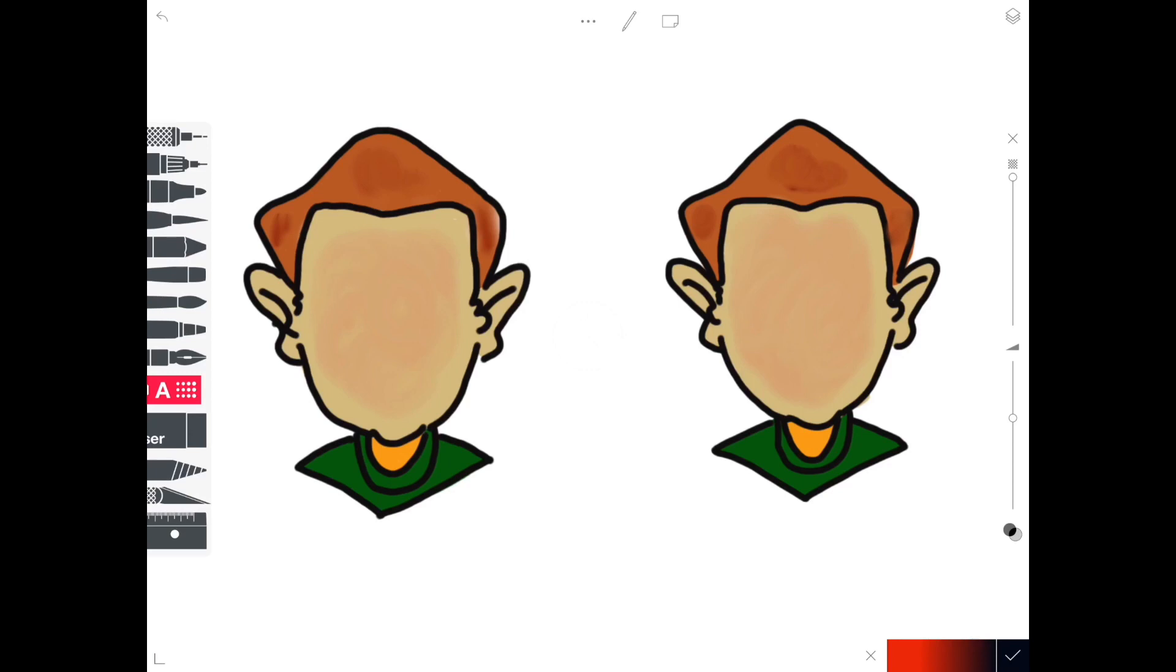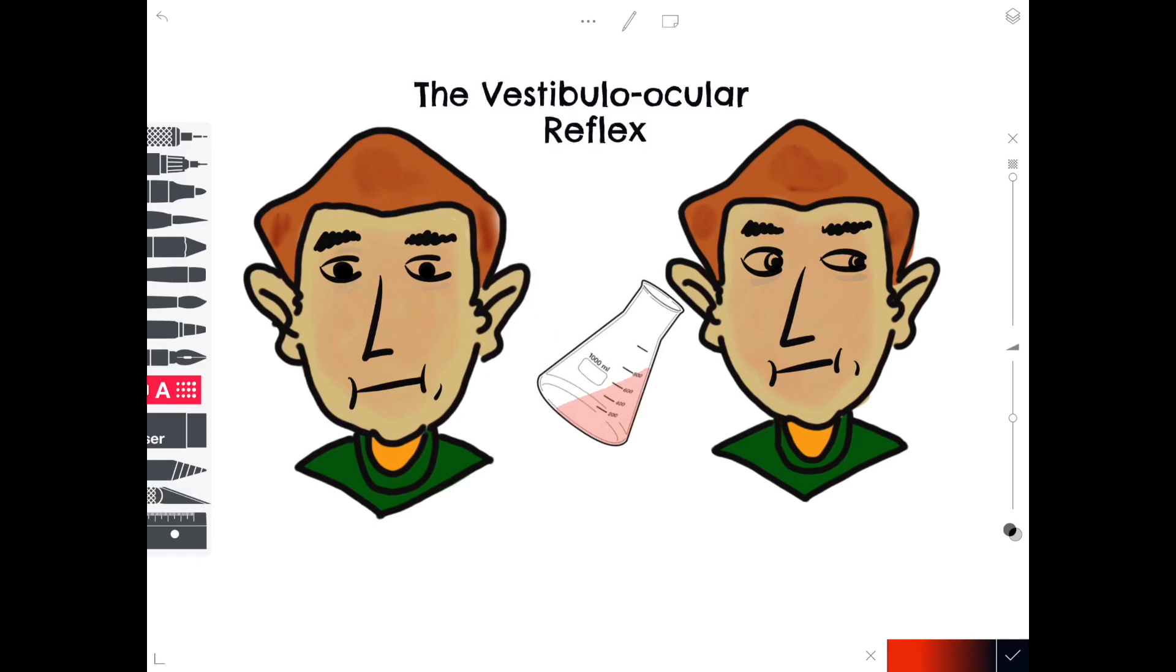Next we can think about the vestibulo-ocular reflex. To understand how this actually works in the case, let's appreciate normal vestibulo-ocular function. The function is there to stabilize the visual image. For example, if we move or turn our head to the right, our eyes will move to the left at a similar speed to stabilize the image.